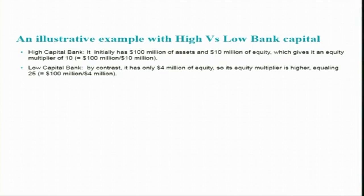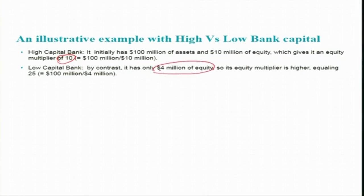Let us take an illustrative example with a high versus low bank capital scenario. The high capital bank has 100 million of assets and 10 million of equity, giving an equity multiplier of 10 (100 million divided by 10 million). The low capital bank has the same 100 million of assets but only 4 million of equity capital, giving a higher equity multiplier of 25.